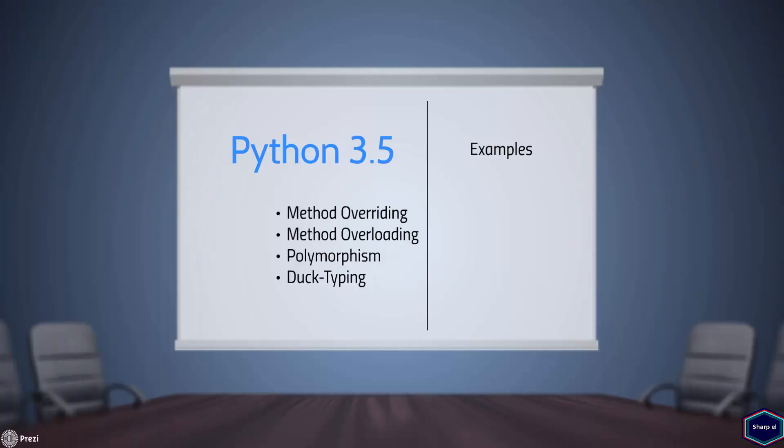Welcome to my next tutorial on object-oriented programming in Python. Today I will discuss four different concepts: method overriding, method overloading, polymorphism, and duck typing.